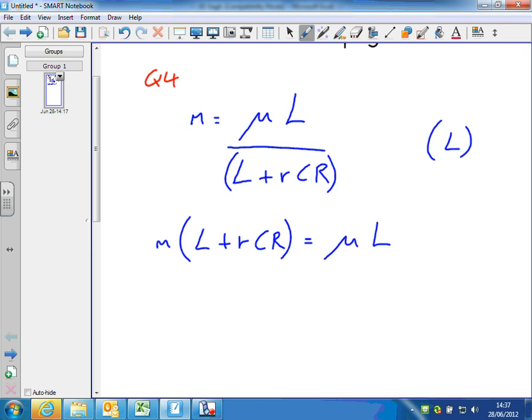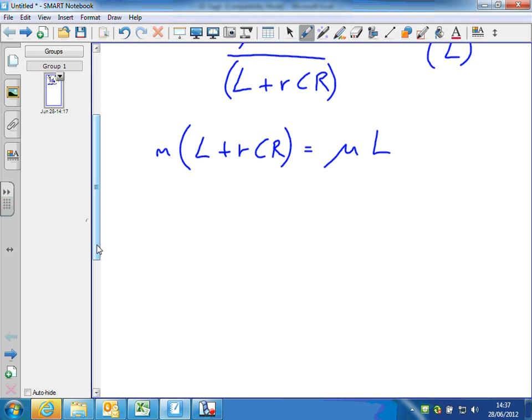Now I'm going to multiply out the bracket, and then I'm going to try and get all terms involving capital L, big L, on the same side. So here we go. So multiplying out, m L plus m r C R equals mu L.